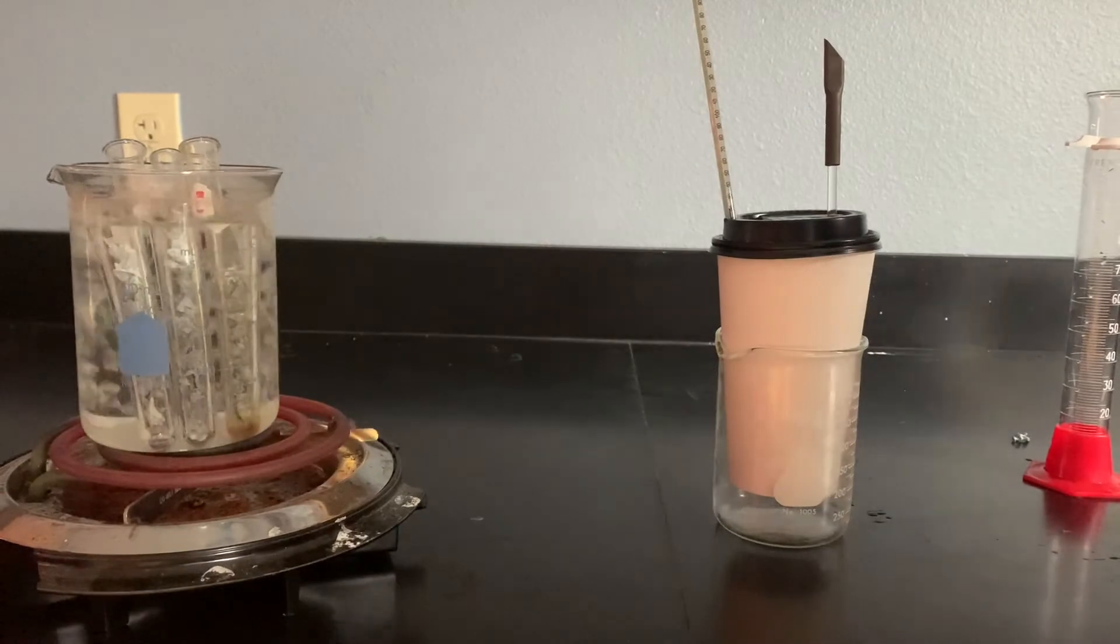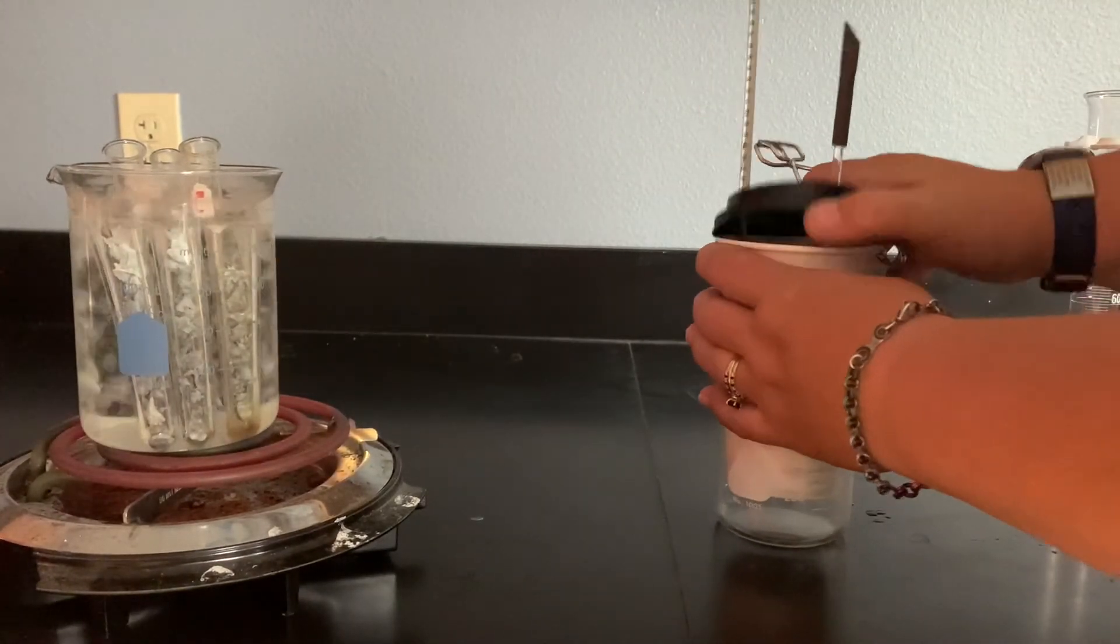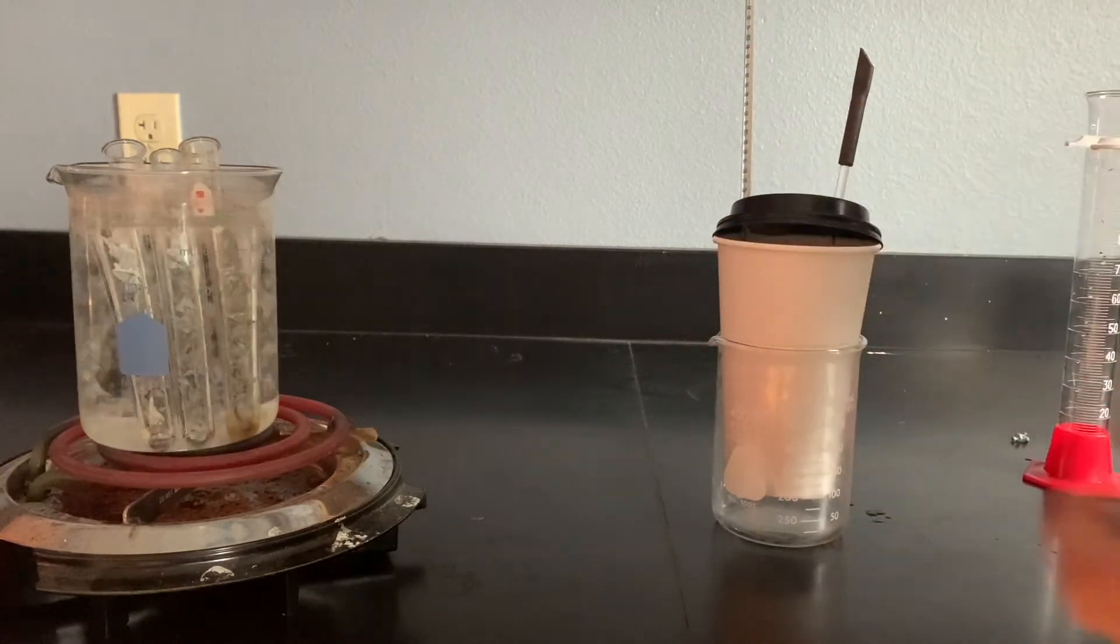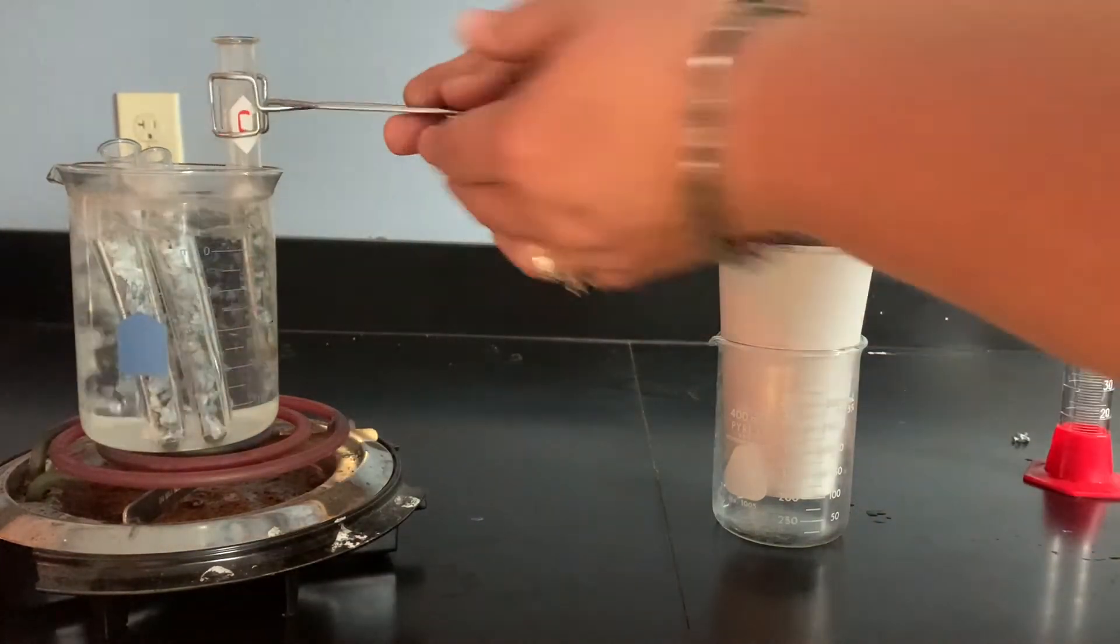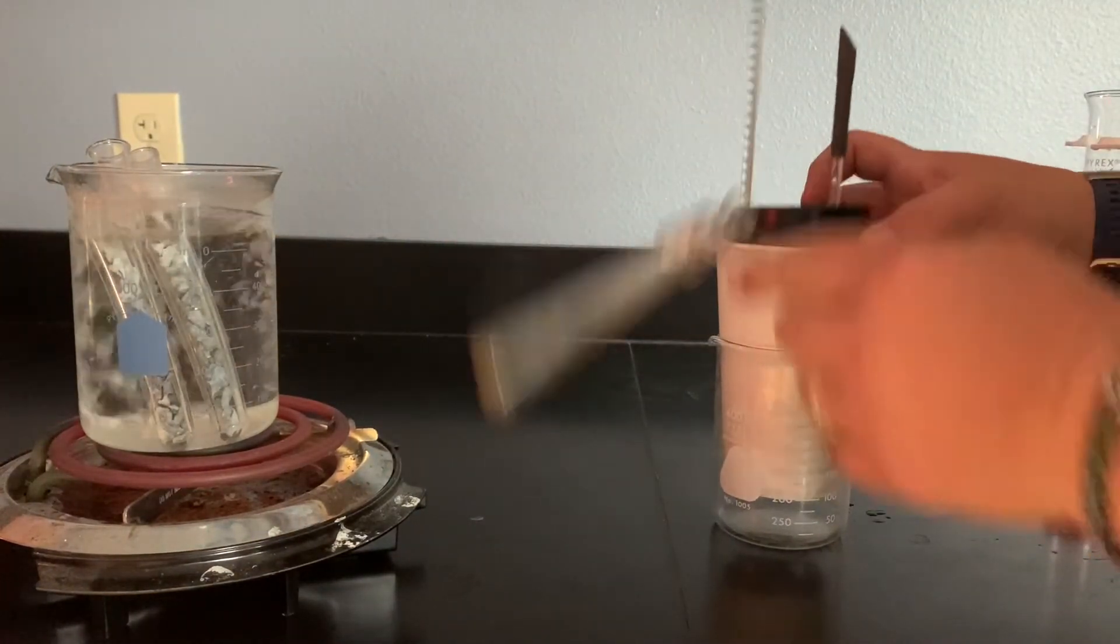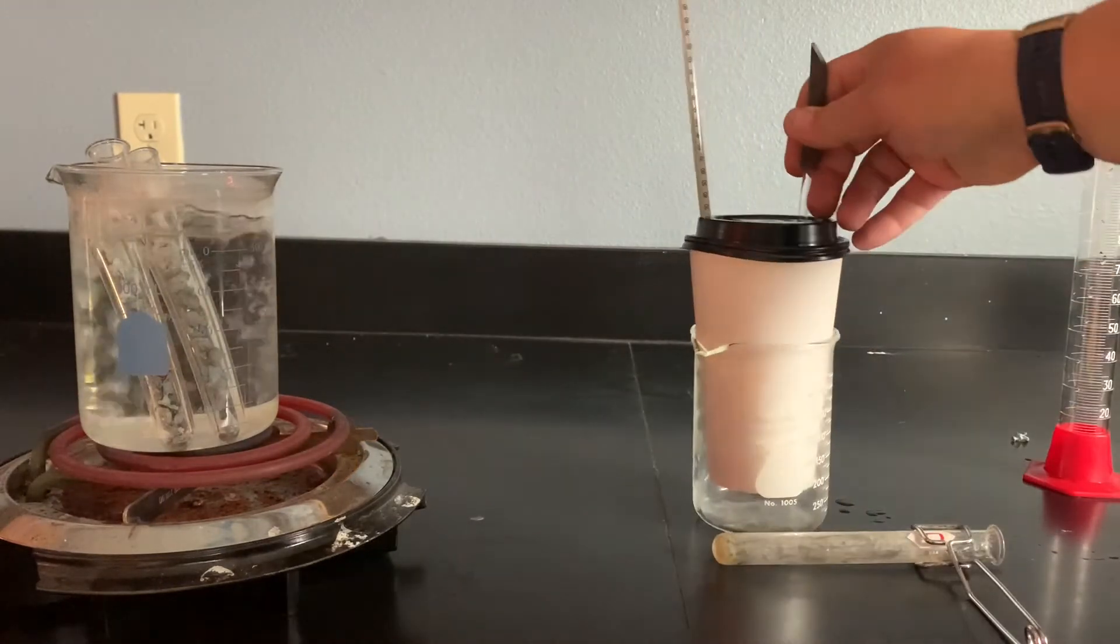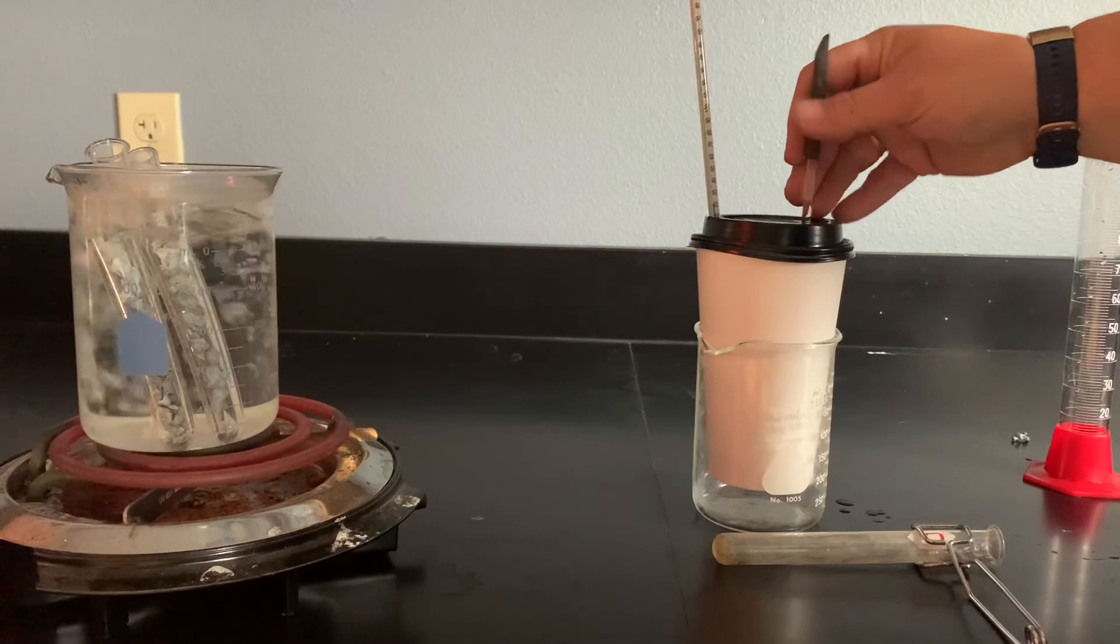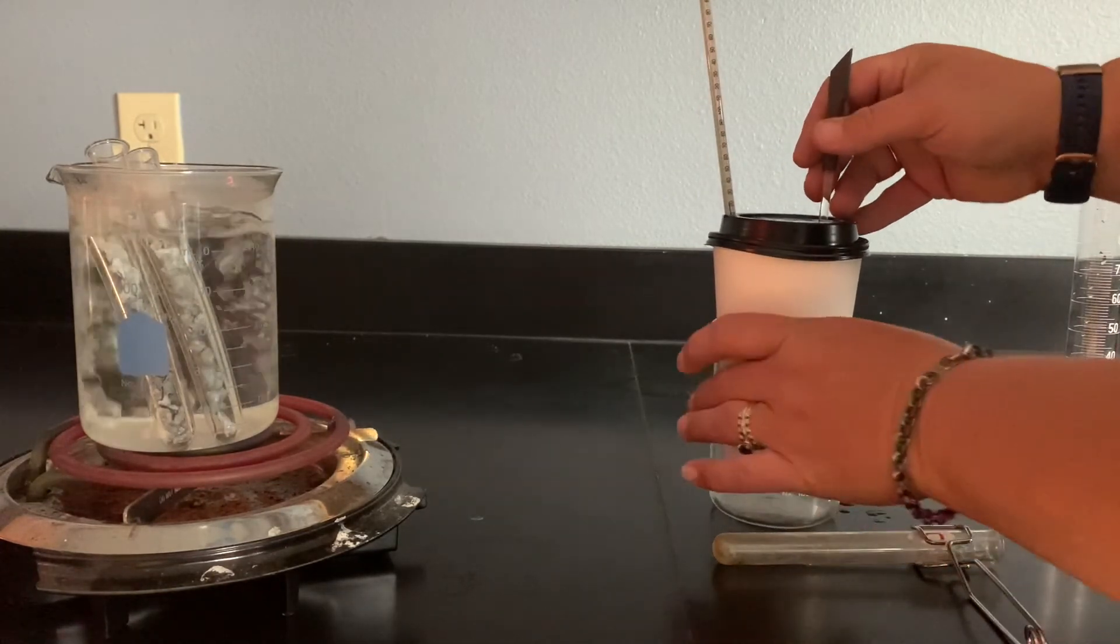Once you have this set up, we're simply going to grab one of the metals I weighed out. I'm simply going to take this, dump it, put it on there and just stir. I'm looking to see what my uppermost temperature is in this reaction.